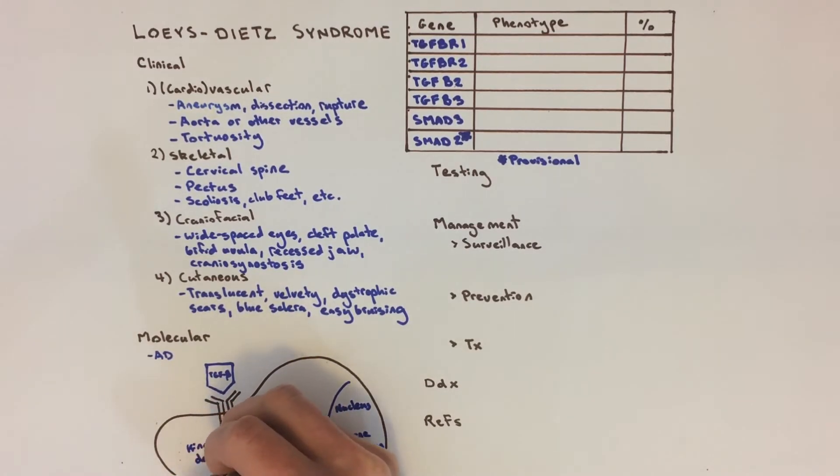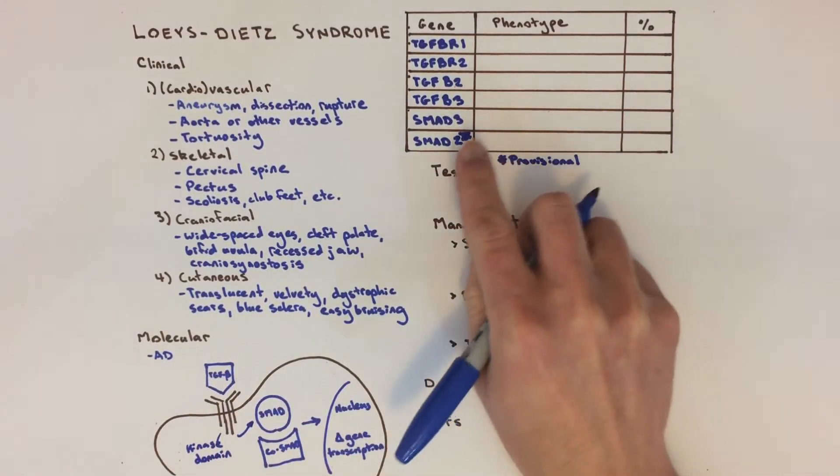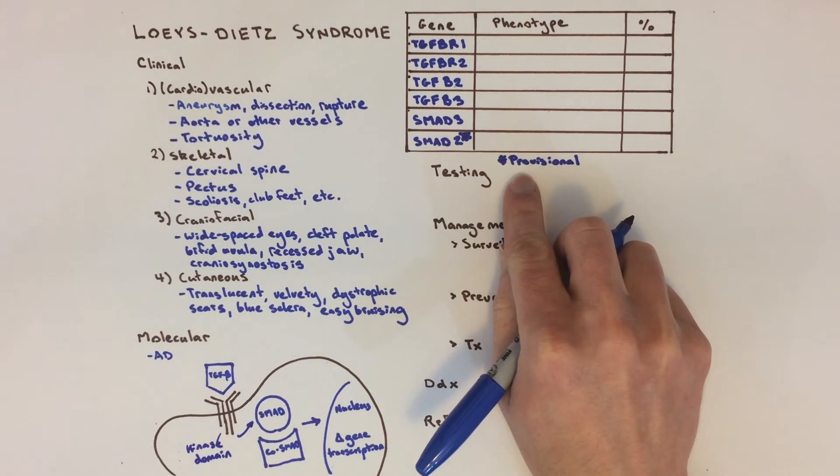SMAD2 is a provisional gene, meaning more patients with mutations in this gene need to be described to prove whether or not it's really associated with Loeys-Dietz syndrome.